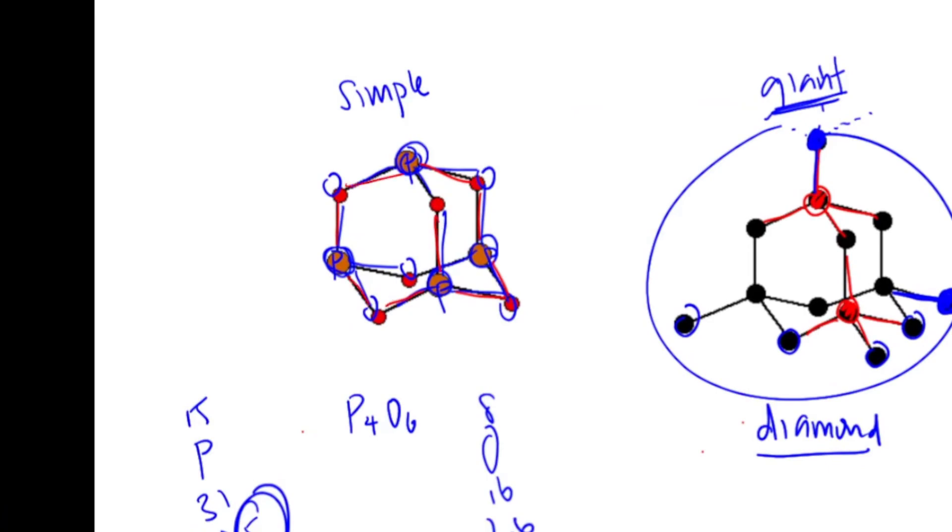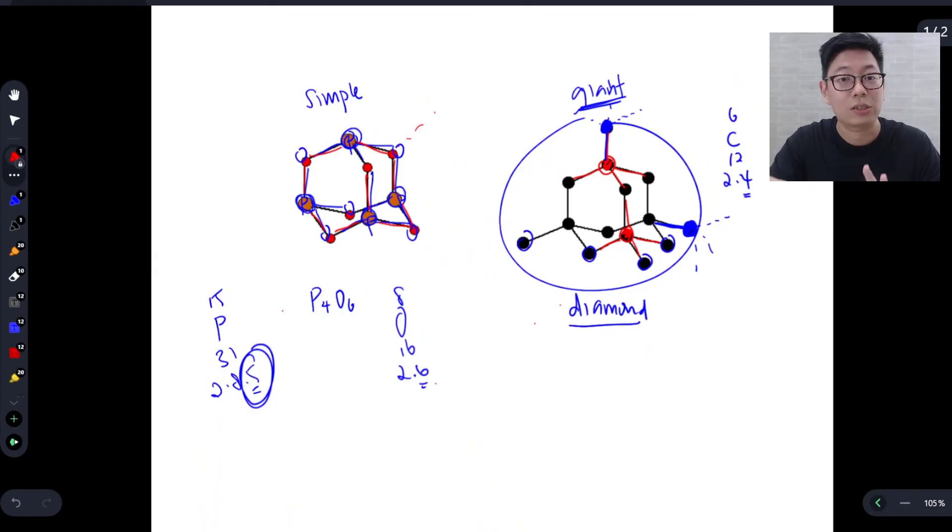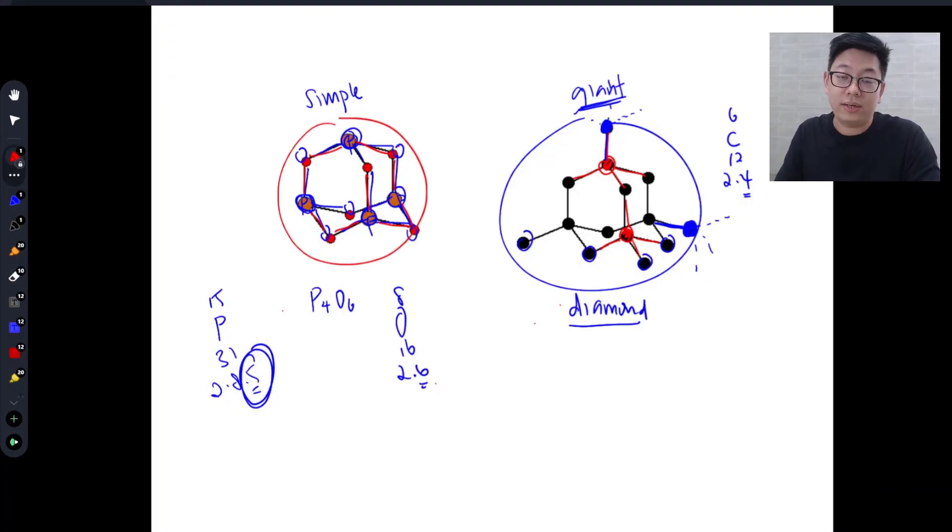So what this means is that there are no extensions. There's nothing that's hidden, there's nothing that's not shown. And this molecule that you see here is it. This itself is one molecule of P4O6. And that's what makes it small and discrete, and therefore, simple molecular structure.